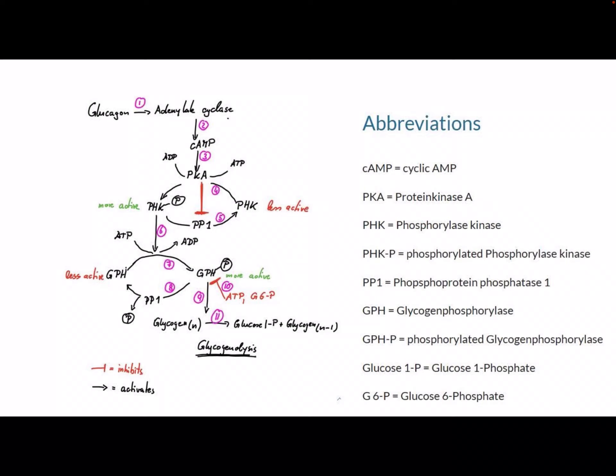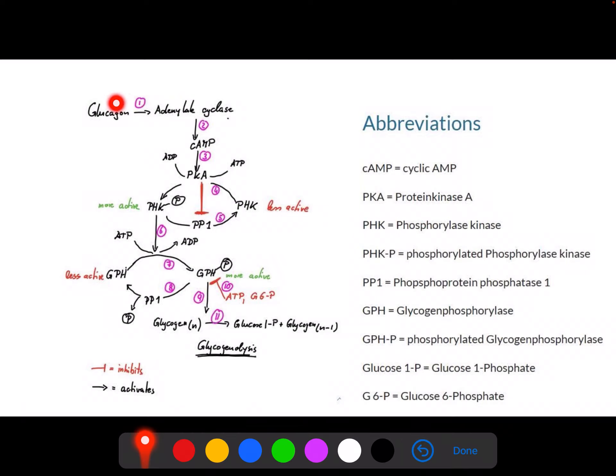It starts off with the release of glucagon, a small peptide hormone also known as the hunger hormone that indicates if we are low in blood glucose levels. Glucagon will bind to its receptor on the cell membrane. It is a seven transmembrane G-protein coupled receptor, and upon binding of glucagon, the G-protein will be released and it will activate another enzyme, adenylate cyclase.